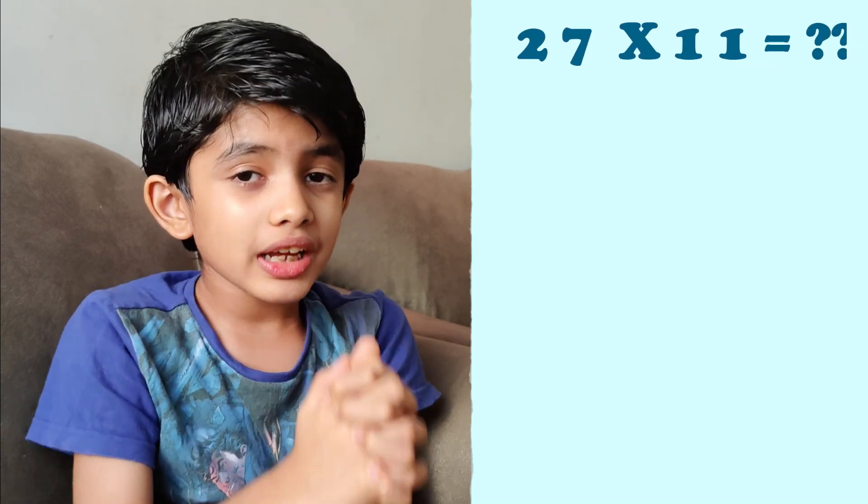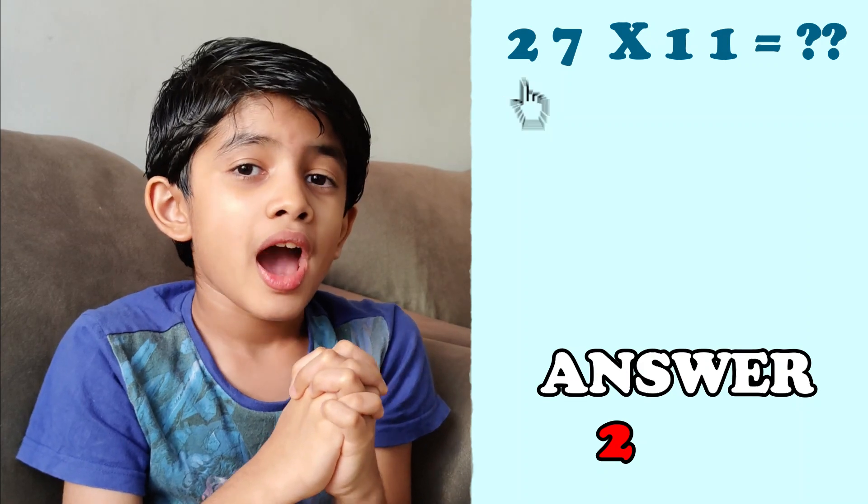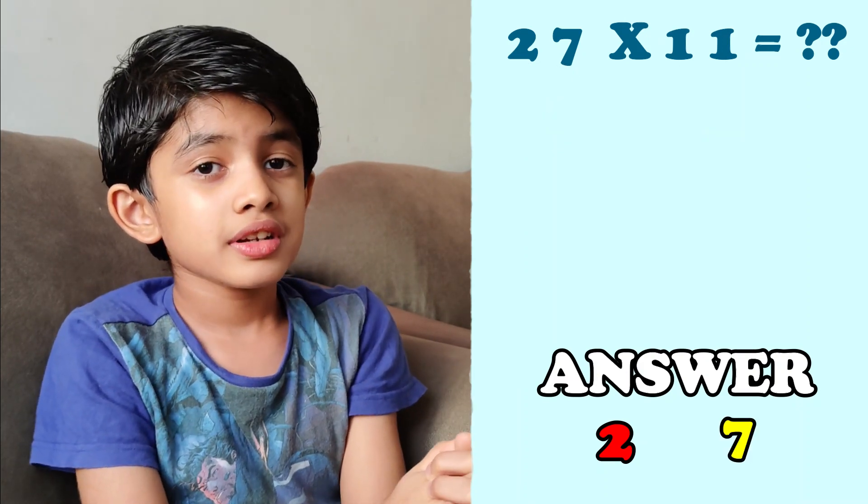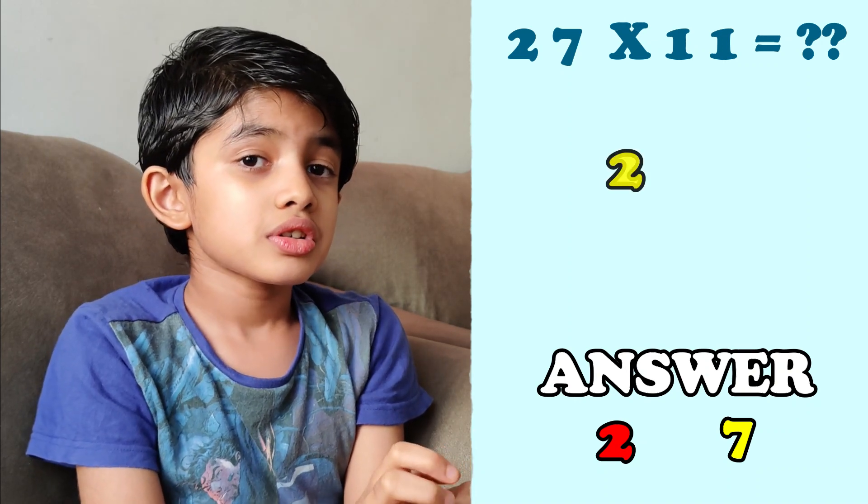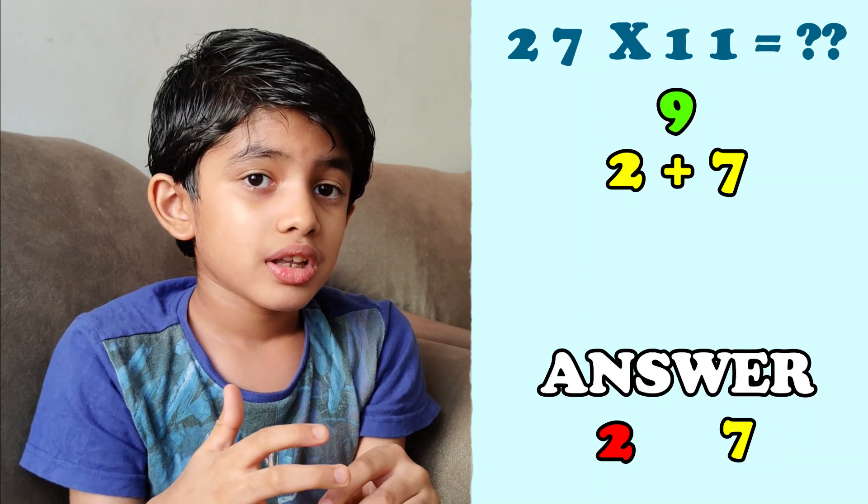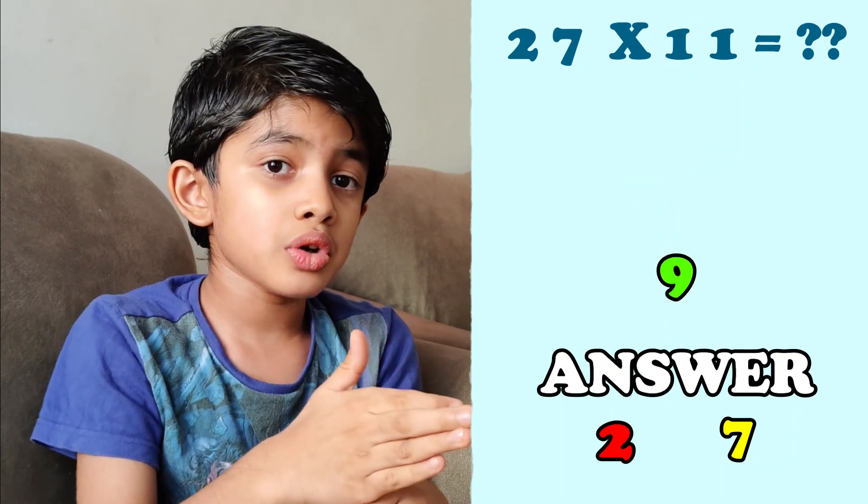How much is 27 times 11? First write 2 as the first digit and 7 as the last digit of the answer. Then add 2 and 7 which will give you 9. Then write that 9 in between 2 and 7. There is your answer. The answer is 297.